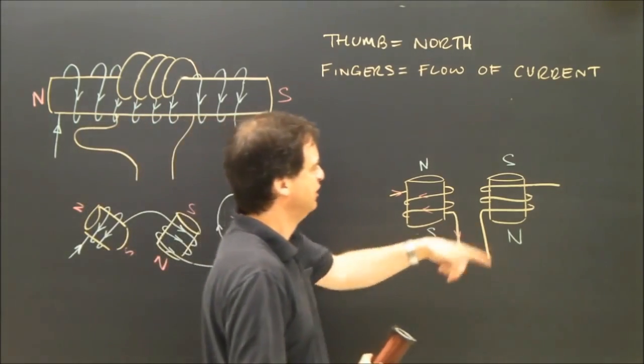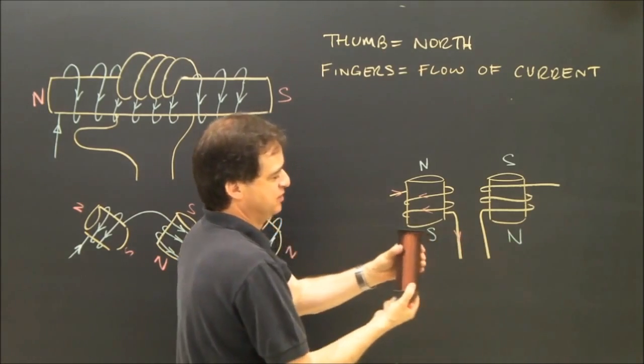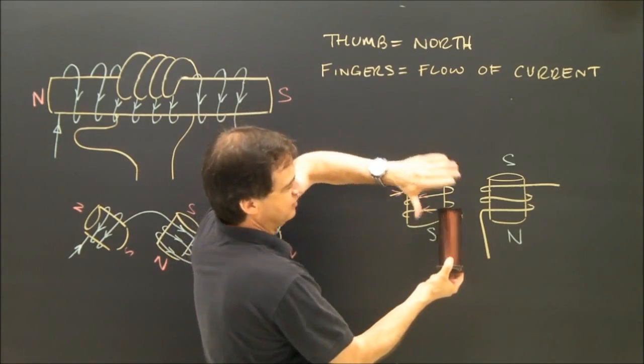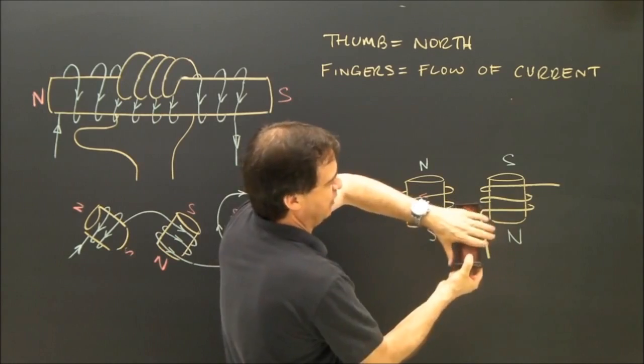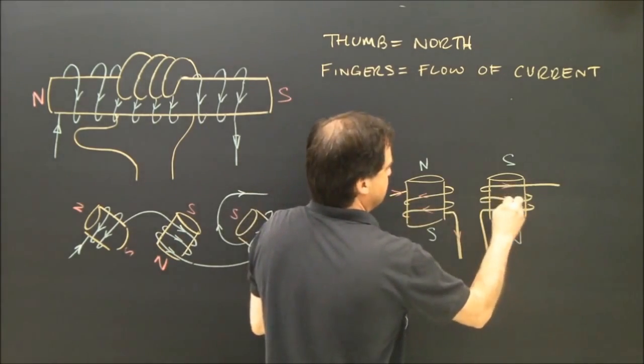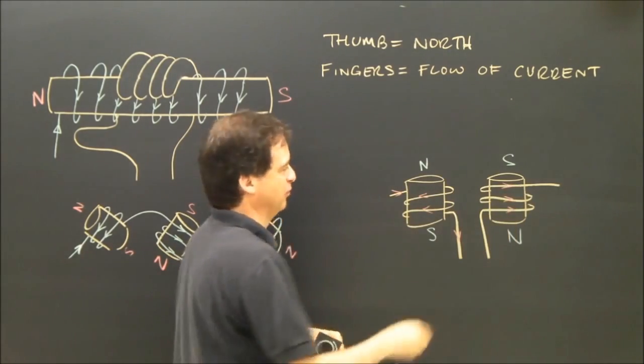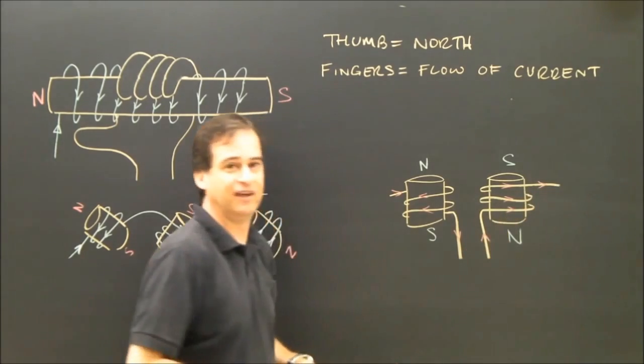This one here, the flow of current creates a north at the bottom, so I've got to put my thumb down. My thumb is down. My fingers are to the right on the front. So the current must be flowing that way, out here and in there.